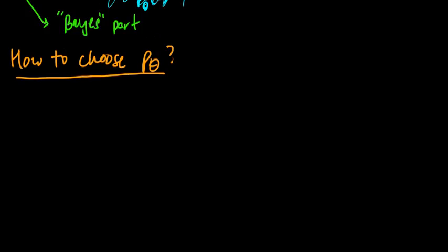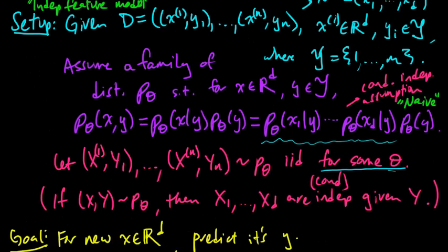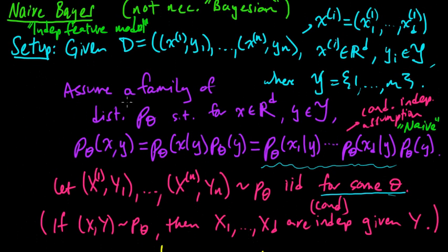So the first thing is how to choose this family, P theta. Some common choices for this family, remember that in our Naive Bayes model here, we were assuming some family of distributions, P theta, as theta ranges over some space of parameters. And so what should we choose?